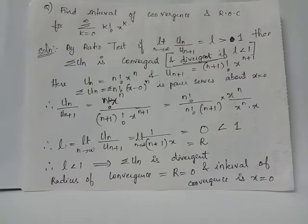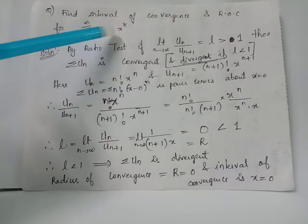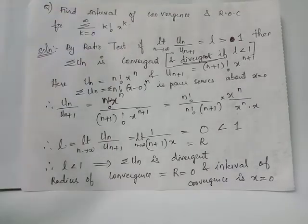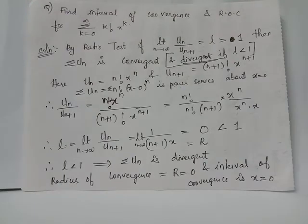Let us find out the interval of convergence and radius of convergence for the power series summation where k ranges from 0 to infinity of k factorial multiplied by x raised to k. Notice that this power series is a power series in x, or it is a power series about x equals 0.